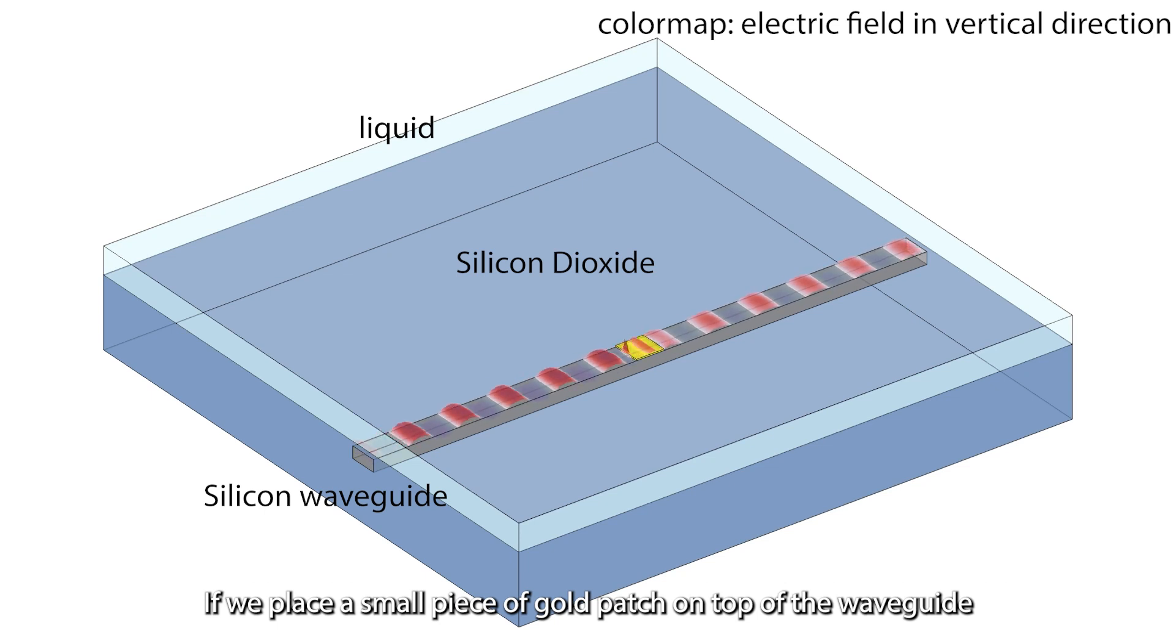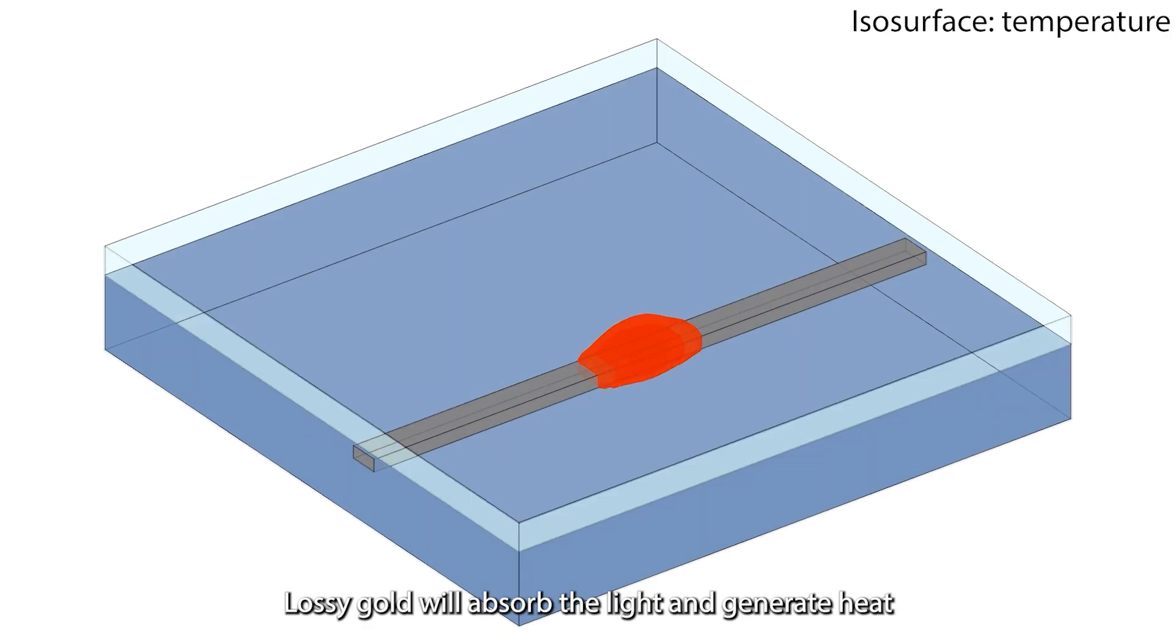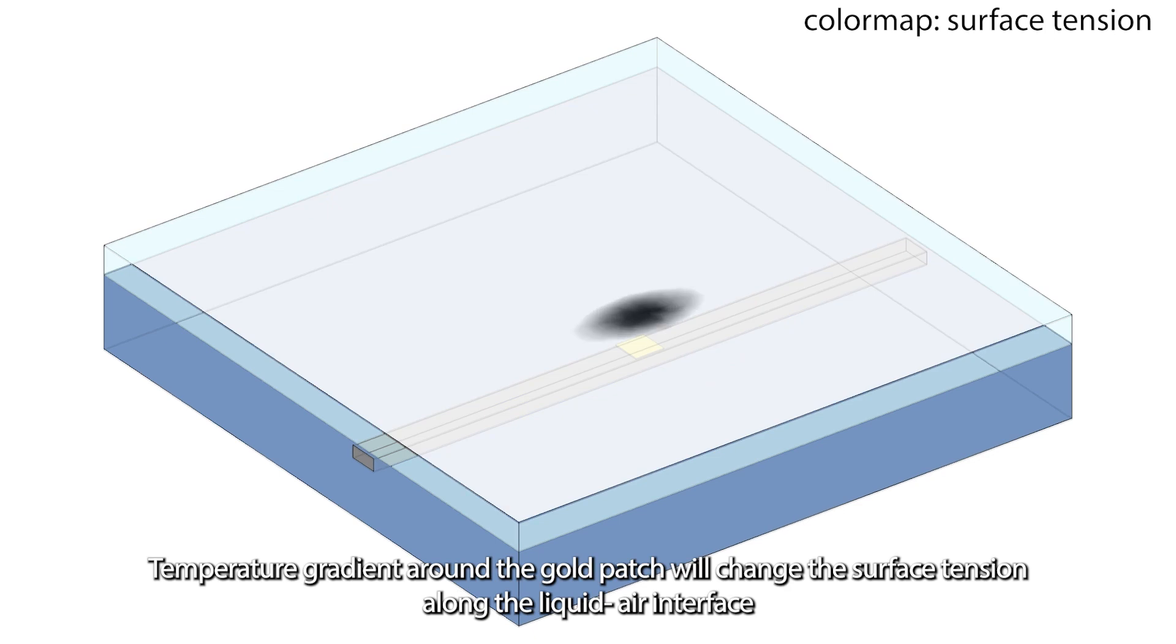If we place a small piece of gold patch on top of the waveguide, lossy gold will absorb the light and generate heat. Temperature gradient around the gold patch will change the surface tension along the liquid air interface.